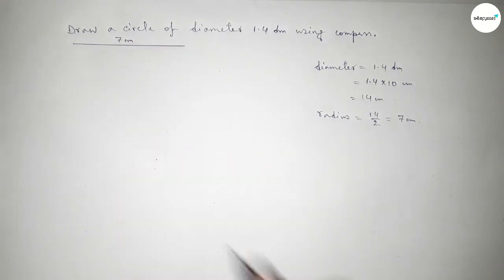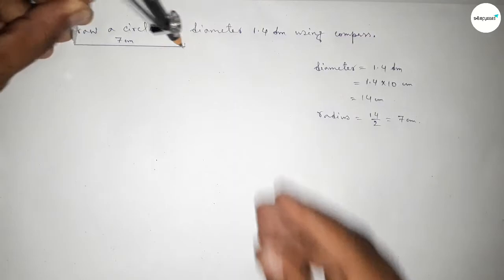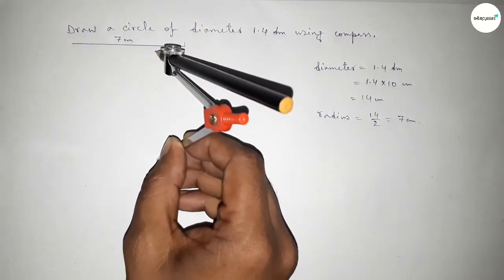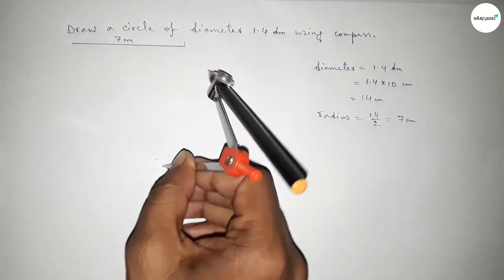Now taking here any point. So next taking the length 7 centimeter by using compass by this way and putting the compass here. So taking here a point, now putting the compass on the point.